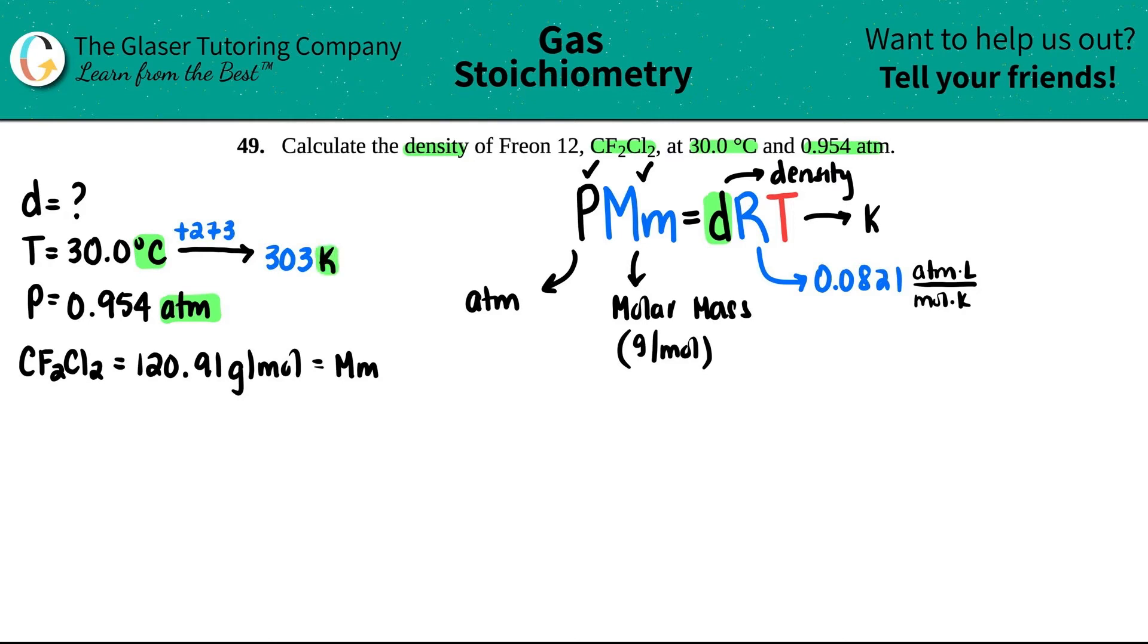So we're all ready to plug everything in, right? I got my R value and my T value, solving for D. So let's go for it. 0.954. My molar mass now, we just found that out, was 120.91. And this equals the density, so I'm just going to label that as X. You can label it as D, whatever you want to do, times by the R value, 0.0821, and then times by the new temperature in Kelvin, 303.